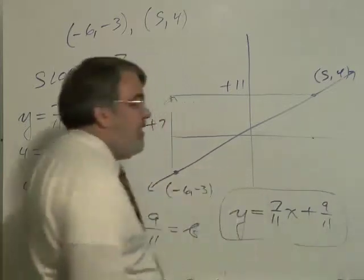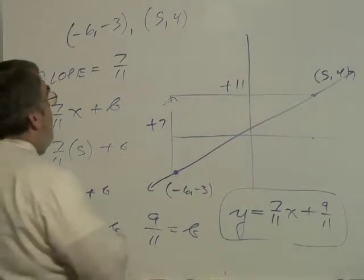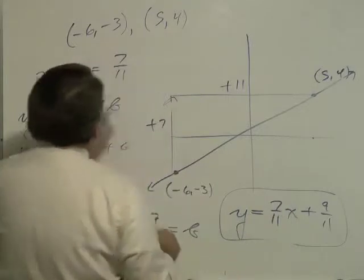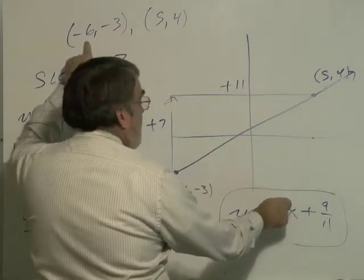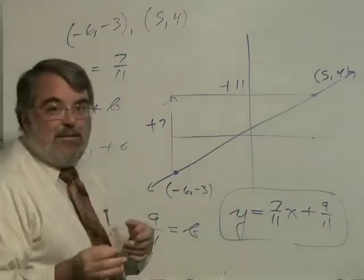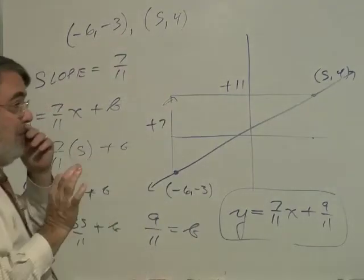Let me show you that this is not hard to check, not as hard as it may look even though there's fractions there. If I plug in minus 6, because you already have common denominators, I've got negative 42 plus 9. Negative 42 plus 9 is negative 33. Negative 33 over 11 is negative 3. That checks.